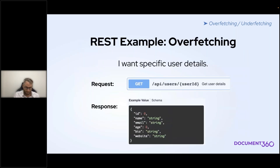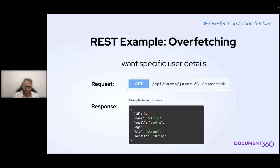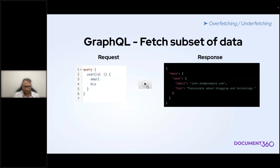The other issue is overfetching. Say I want specific user details of a blog author — I send a request to slash API slash users with the user ID, and I get the user object back. But all I wanted was the email and the bio. With REST, when you send this request you get the entire object back, which can lead to increased network traffic. With GraphQL, I create a query, pass the ID to the user type, specify that I only want the email and the bio, and in the response I get exactly the information I need — nothing else.